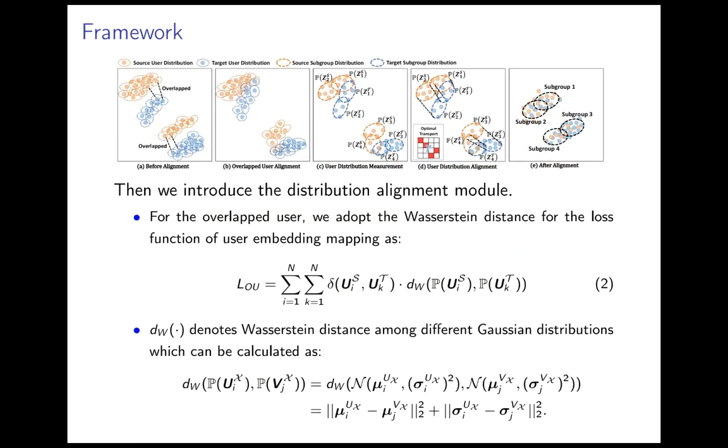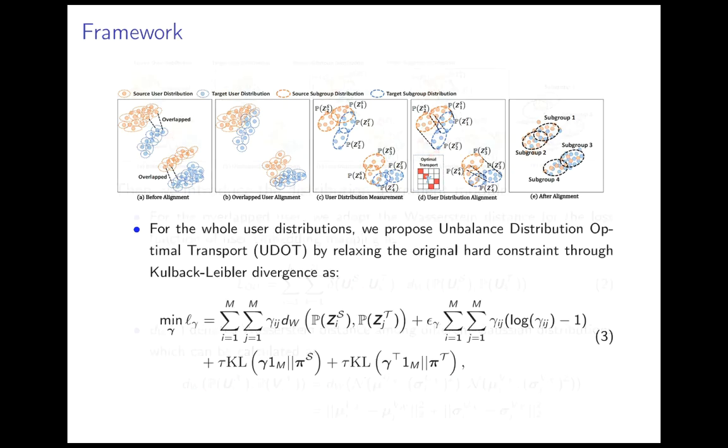Then we introduce the distribution alignment model. For the overlap users, we adopt the Wasserstein distance for the loss function of user embedding mapping as LOU. For the whole user distributions, we propose unbalanced distribution optimal transport, UDOT.